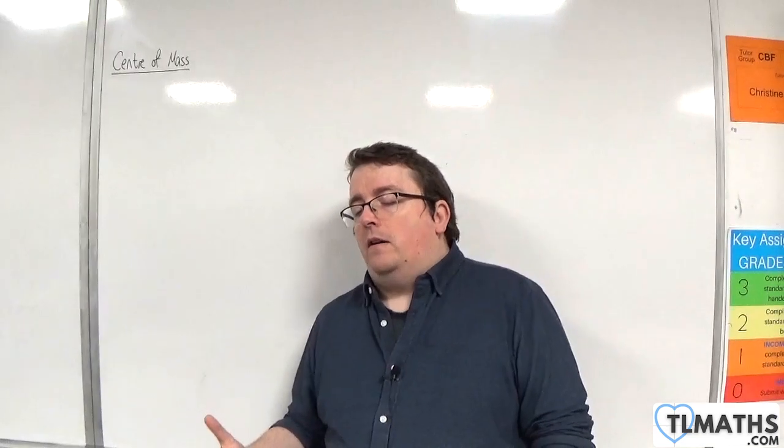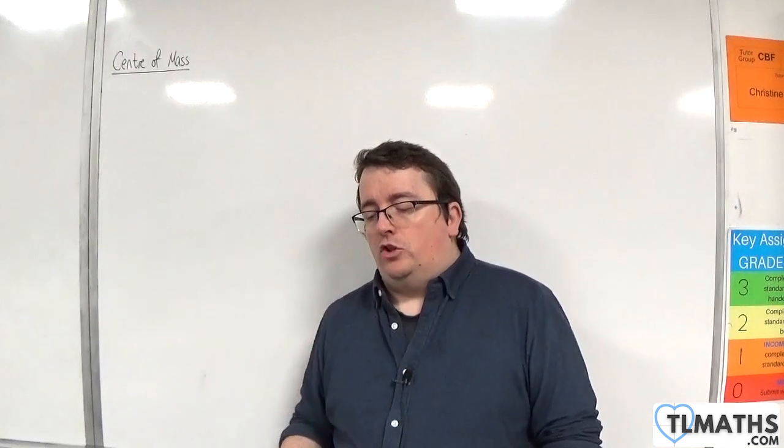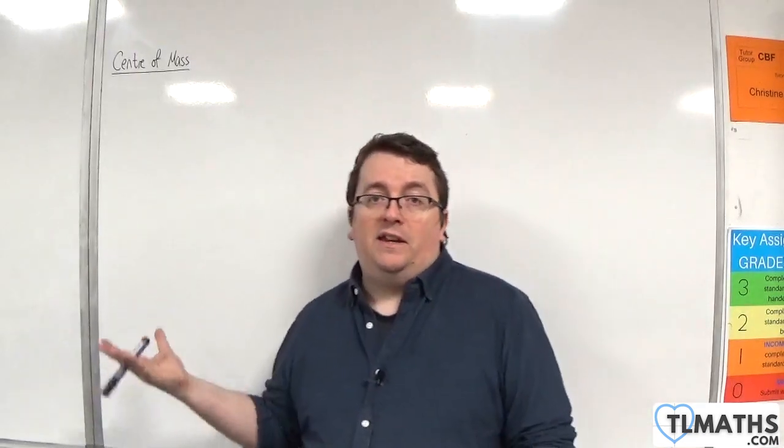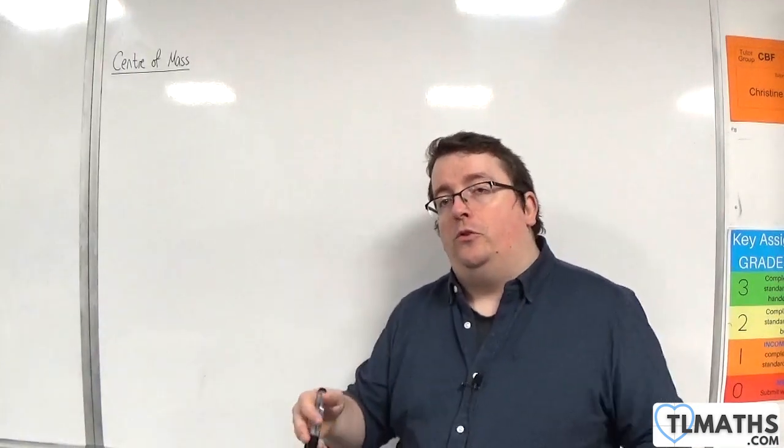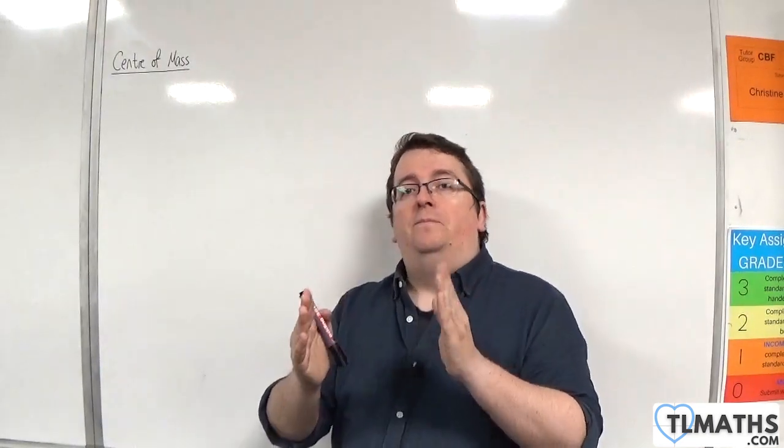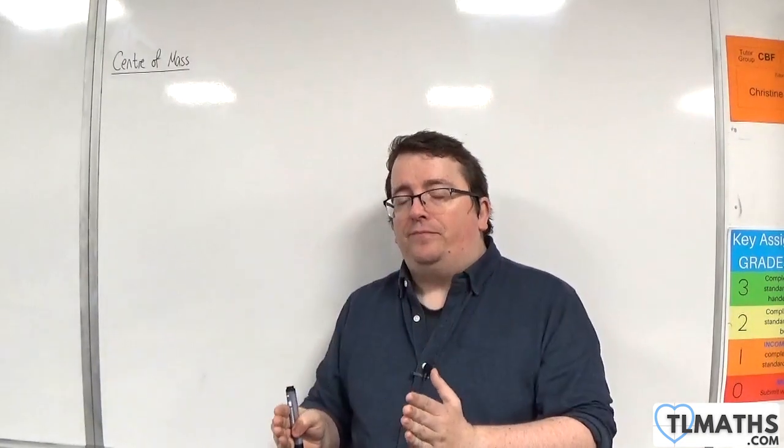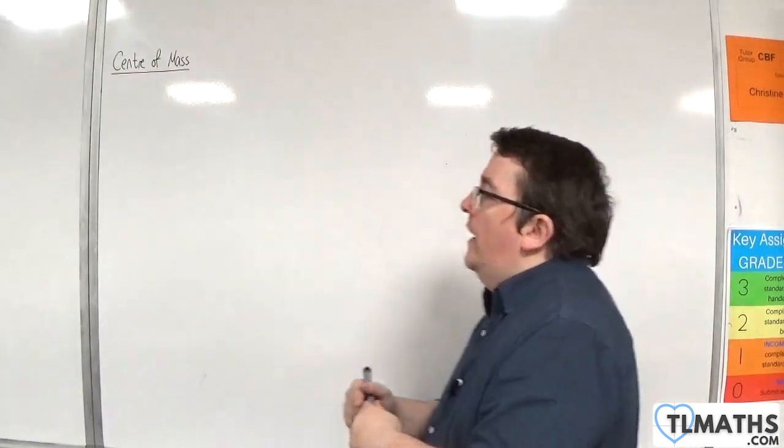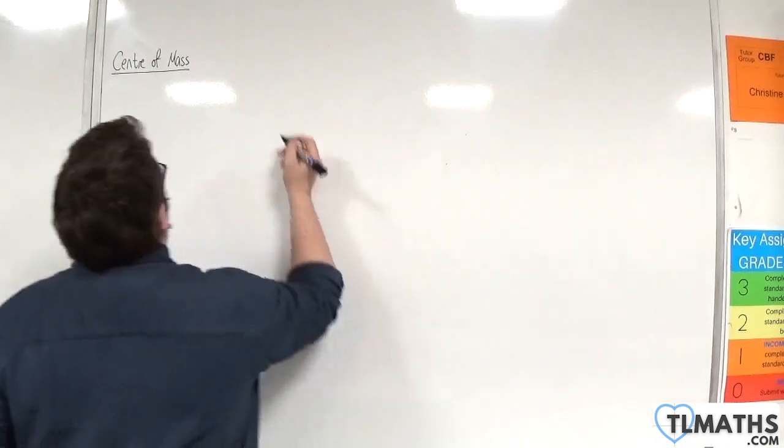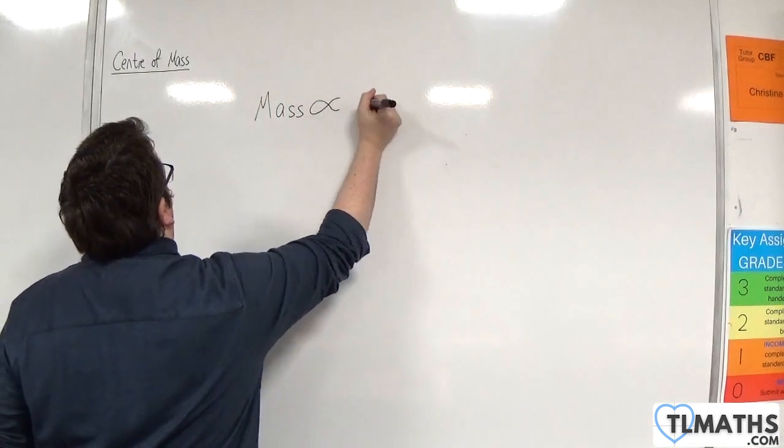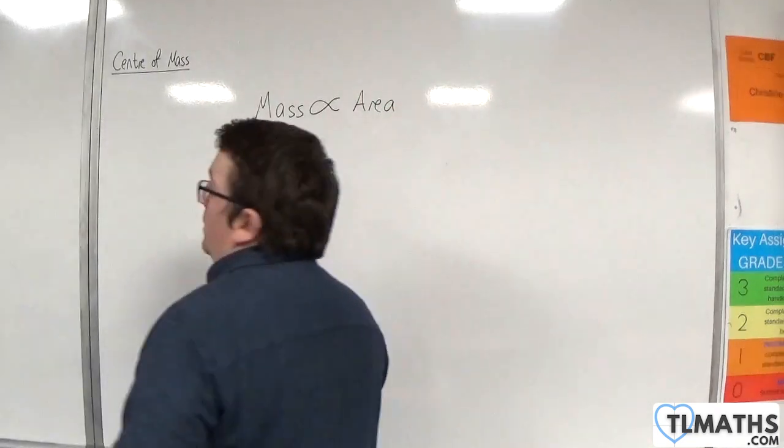When we are using a weighted average, and we've been looking at particles that have a particular mass, and we've been able to draw a table with one column being mass, for a laminar, the key thing here is that the mass of your laminar is proportional to its area.